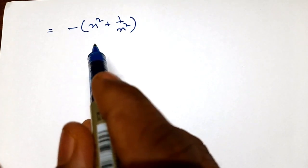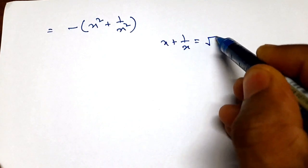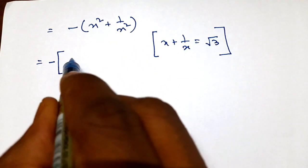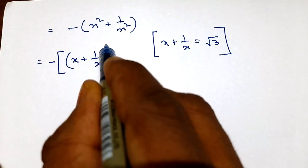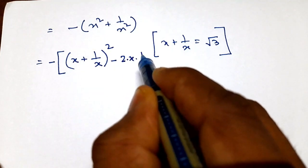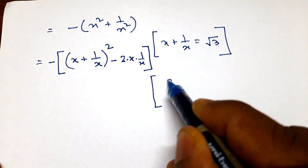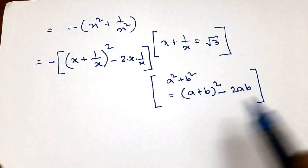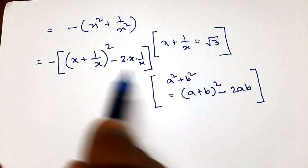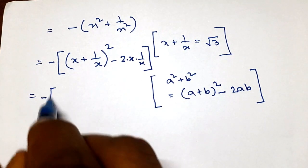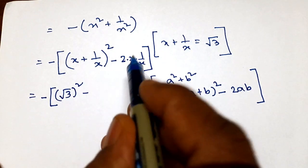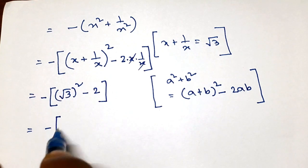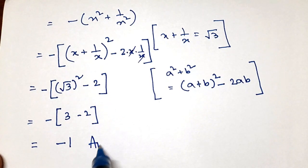We have the value of x + 1/x = root 3. Taking the minus outside, we write x² + 1/x² as (x + 1/x)² minus 2 times x times 1/x — using the identity a² + b² = (a+b)² - 2ab. Here a is x and b is 1/x. So substituting, this becomes root 3 squared minus 2, which is 3 minus 2 equals 1. Therefore the answer is minus 1.